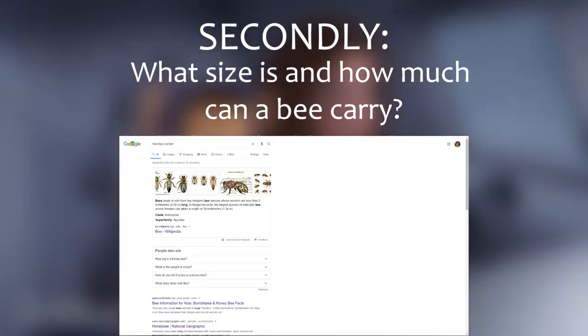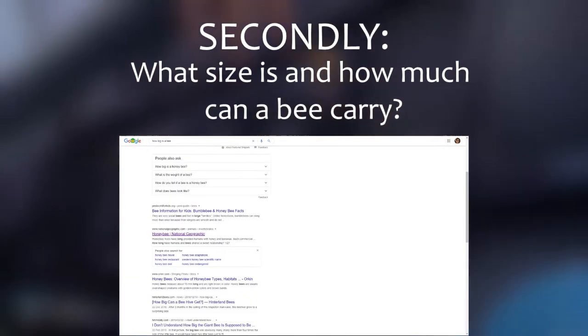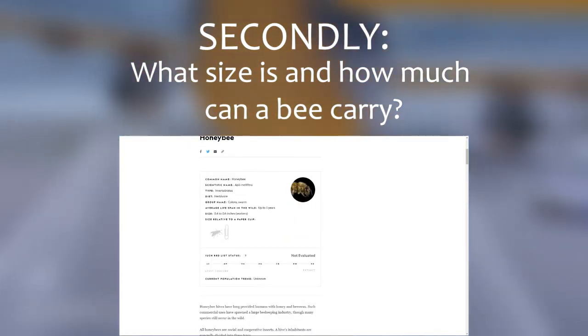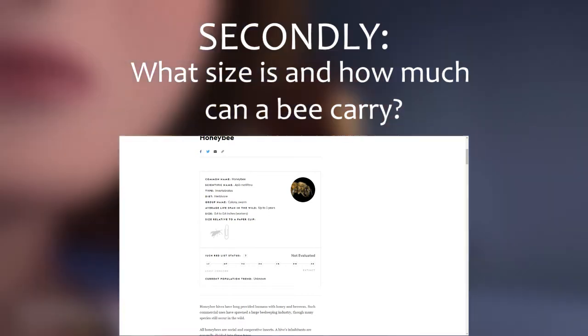For the size of a bee, I just had to google it and find a reliable source. According to National Geographic, a honeybee is around 1.3cm long and 0.5cm wide.